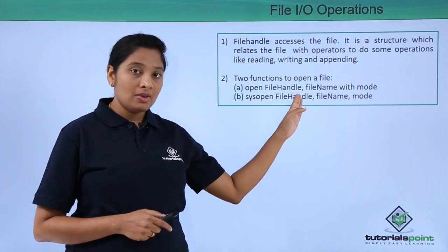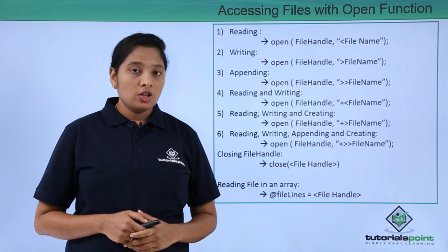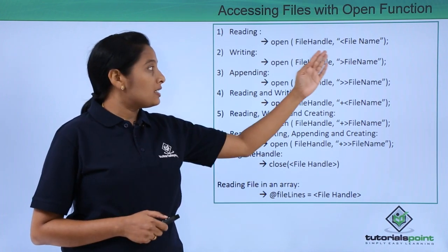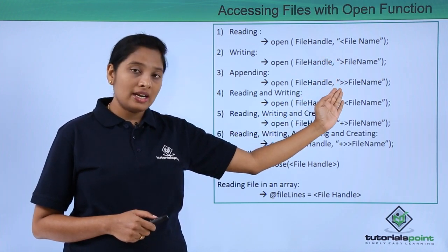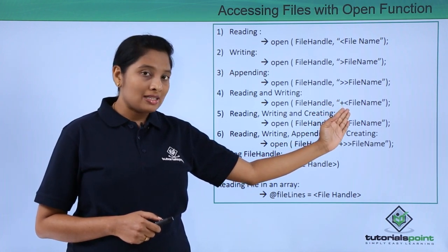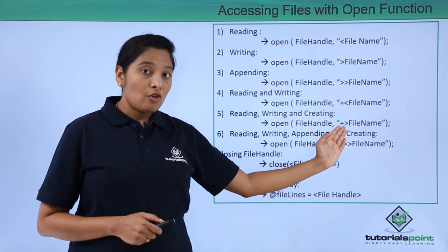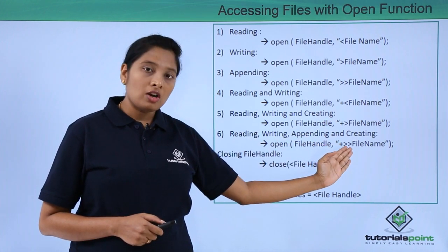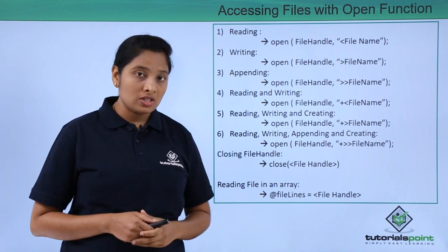Give the file handle name followed by the file name with mode, or you can use the sysopen function to access the file in whatever mode you want. You have to use certain symbols: for reading use less than (<), for writing use greater than (>), for appending use two greater than symbols (>>). For reading and writing use plus followed by less than (+<), for reading, writing, and creating use plus followed by greater than (+>), and for all operations use plus followed by two greater than symbols (+>>).